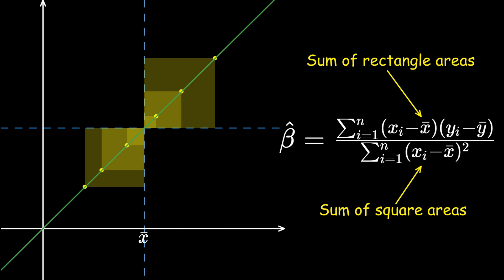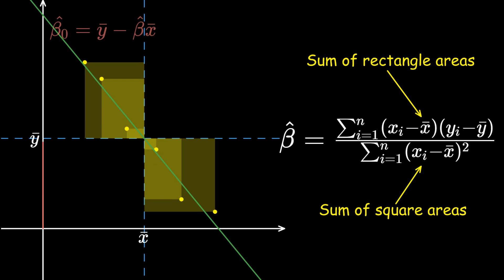And finally, once we know beta hat, we can calculate the y-intercept beta naught hat, because the regression line is guaranteed to pass through the centroid, x-bar, y-bar.